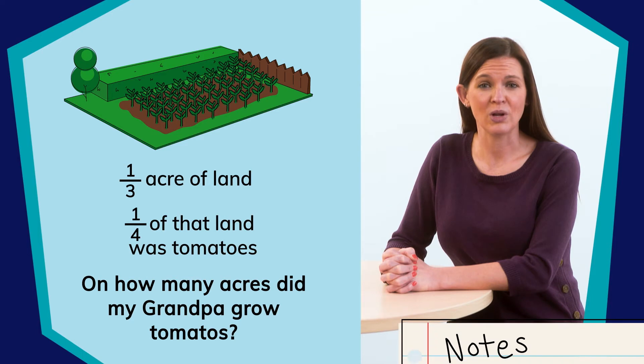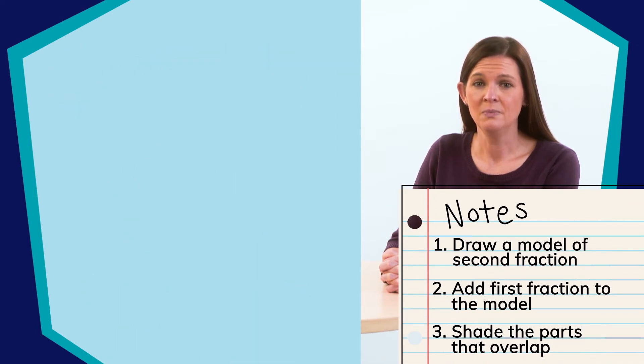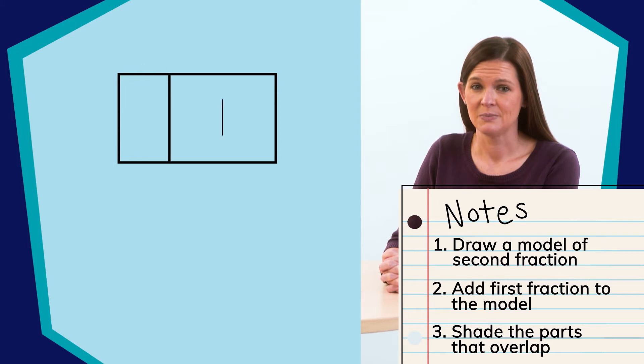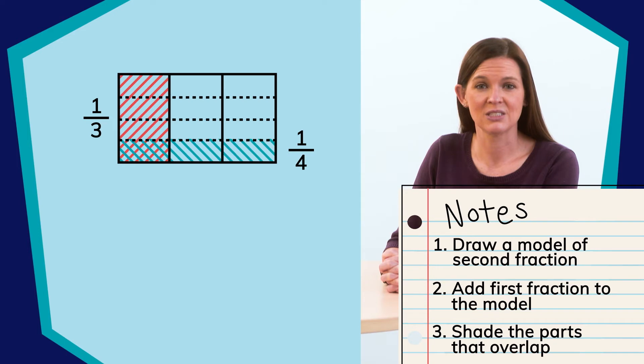Well, looking at our anchor chart, we know that we need to draw out a model for one-third of an acre. That should look like this. Next, we need to find one-fourth of that one-third. So, we can draw fourths over the whole and shade in one-fourth of it. Now, how many total pieces did we create?